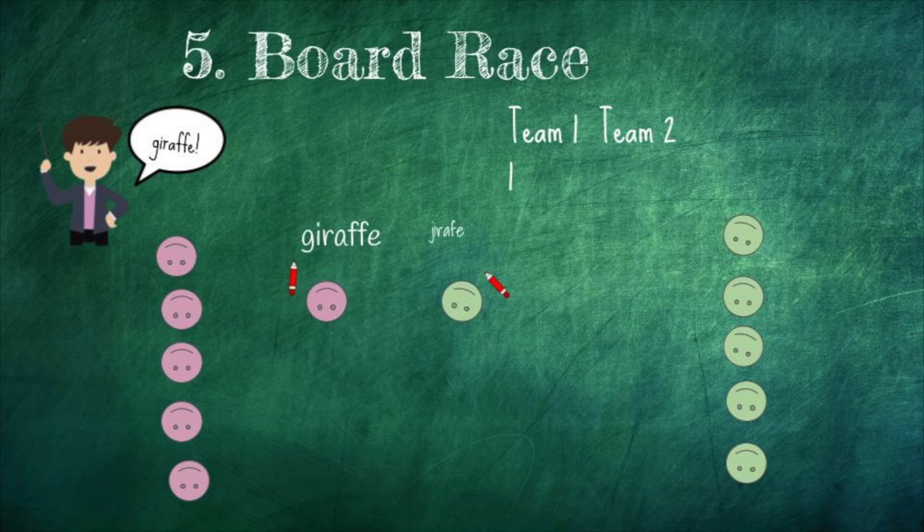Our last game is Board Race. Board Race is so much fun but it can also get really crazy. You're going to split your class into two different teams and pick one representative for each team to go to the back of the class. They're going to have a writing utensil like a whiteboard marker or a piece of chalk, and you are going to shout out a vocabulary word or a question or anything that you're working with. Those two representatives have to run as fast as they can to the front of the room and write the word correctly on the board. Whoever gets it correctly and legibly gets a point for their team — and that's Board Race.